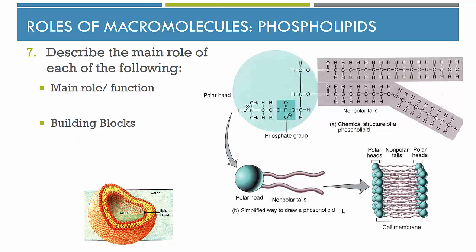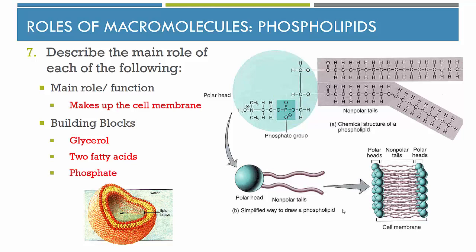The next type of lipid is the phospholipid. Phospholipids are related to lipids but have a very specific role and function: to make up the cell membrane. The building blocks of a phospholipid are a glycerol, two fatty acids instead of three, and a phosphate group. The phosphate group forms a polar head, while the two fatty acids form nonpolar tails. When placed in water, those nonpolar hydrophobic tails don't want to be exposed to water, so the phospholipids arrange themselves so that those nonpolar tails are protected by the polar phosphate heads, forming the phospholipid bilayer that makes up the cell membrane.